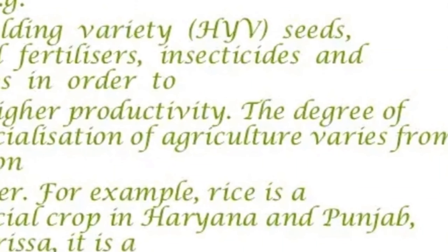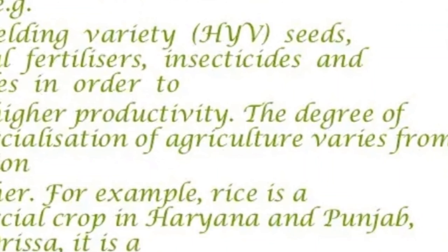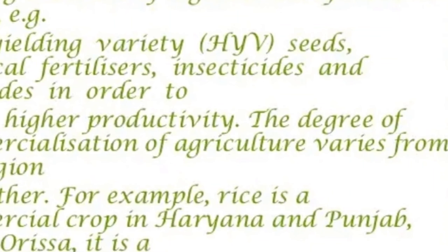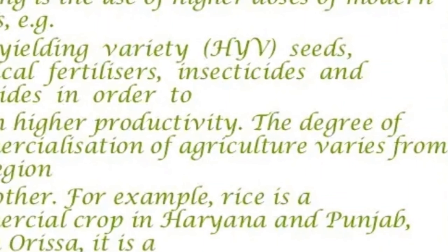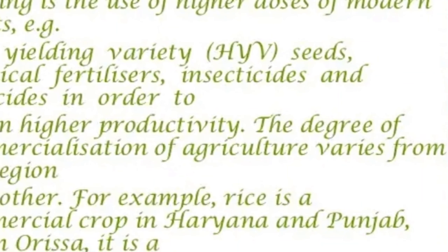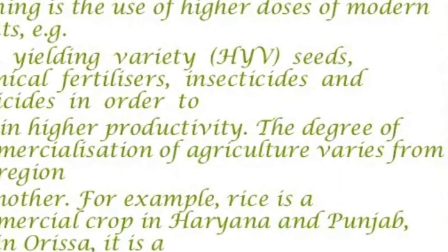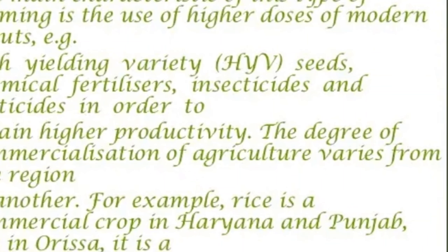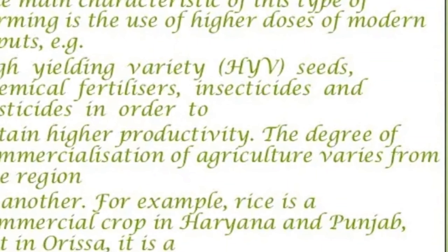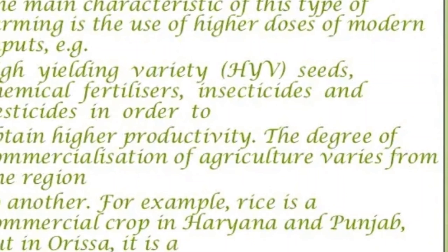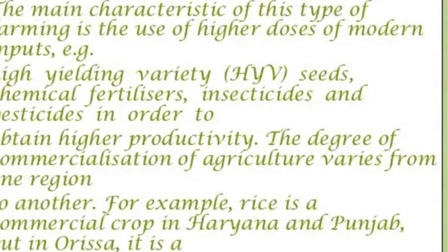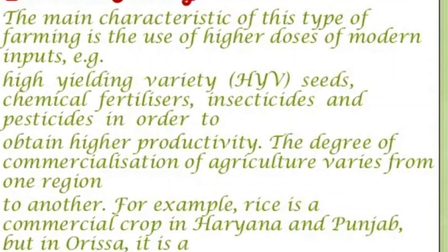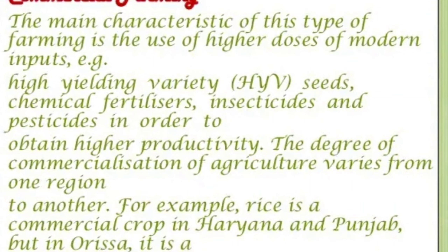The second type is commercial farming. In commercial farming, high-yielding variety seeds are used. They want to produce commercial products — commercial crops like tobacco, tea, coffee, rubber, sugarcane, banana, etc. This type of commercial farming is usually done in Haryana and Punjab. But in Odisha, only subsistence crops are grown. Plantation is also a type of commercial farming where a single crop is grown on a larger area. Tea, coffee, rubber, sugarcane, and banana are commercial crops.